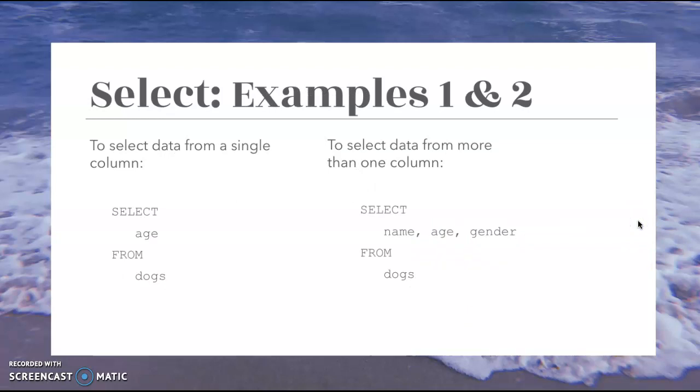And here are our examples for select. So to select data from a single column, all you have to do is select age, which is the column name, from dogs, which is the table name again. And to select data from more than one column, all you'll do is add commas between the different column names from the table.